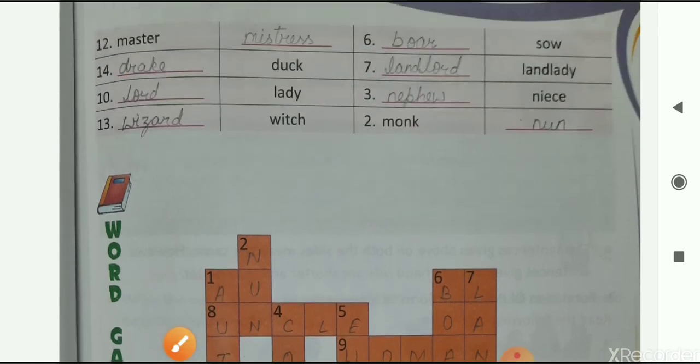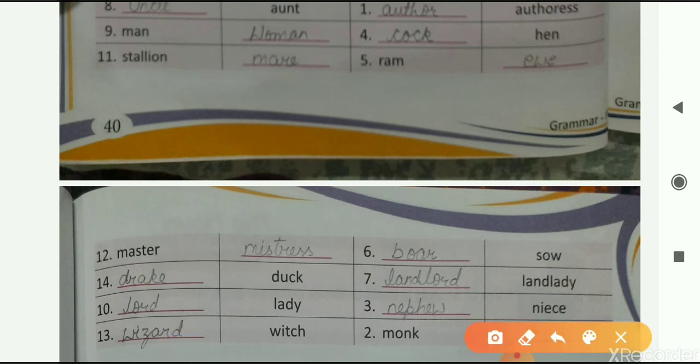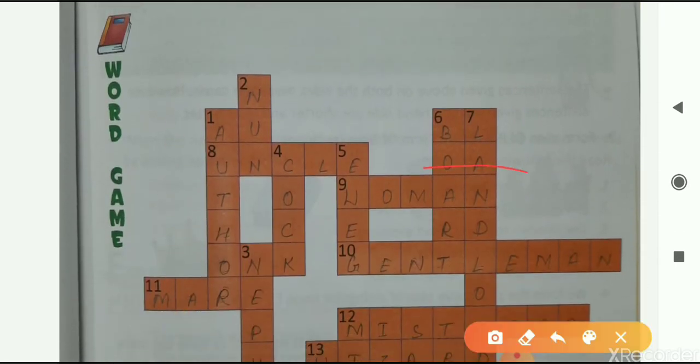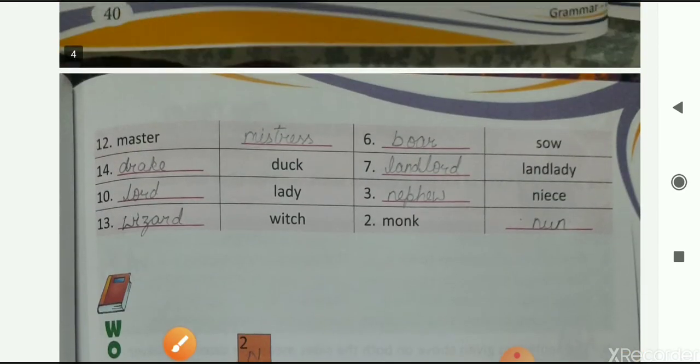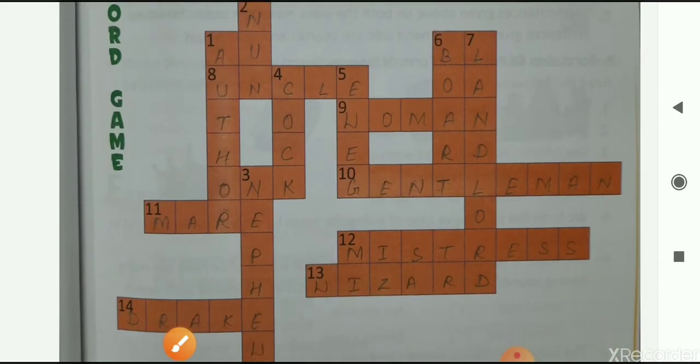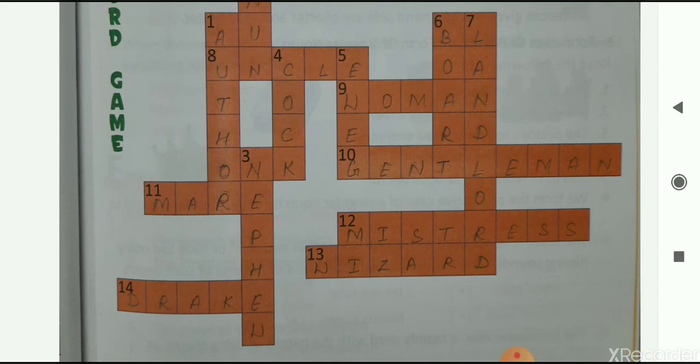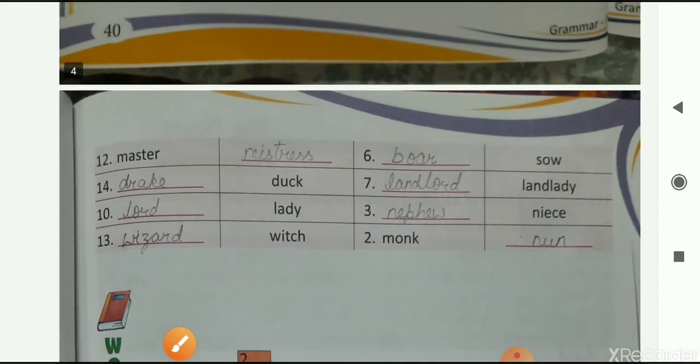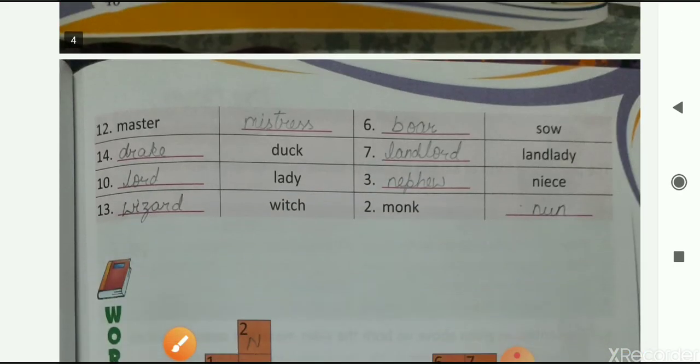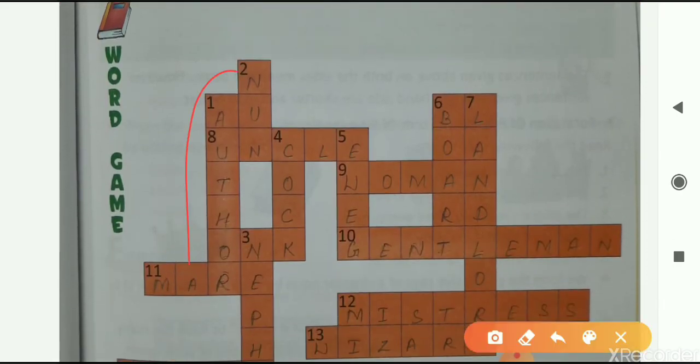Uncle on number eight. Next one is, man. Man. Its feminine noun is woman. So write here, woman on number nine. The next is stallion. Feminine noun of stallion is mare, M-A-R-E. So write here M-A-R-E, mare on number 11. Next is authoress. Its masculine noun is author, A-U-T-H-O-R. Write author on number 1. A-U-T-H-O-R.